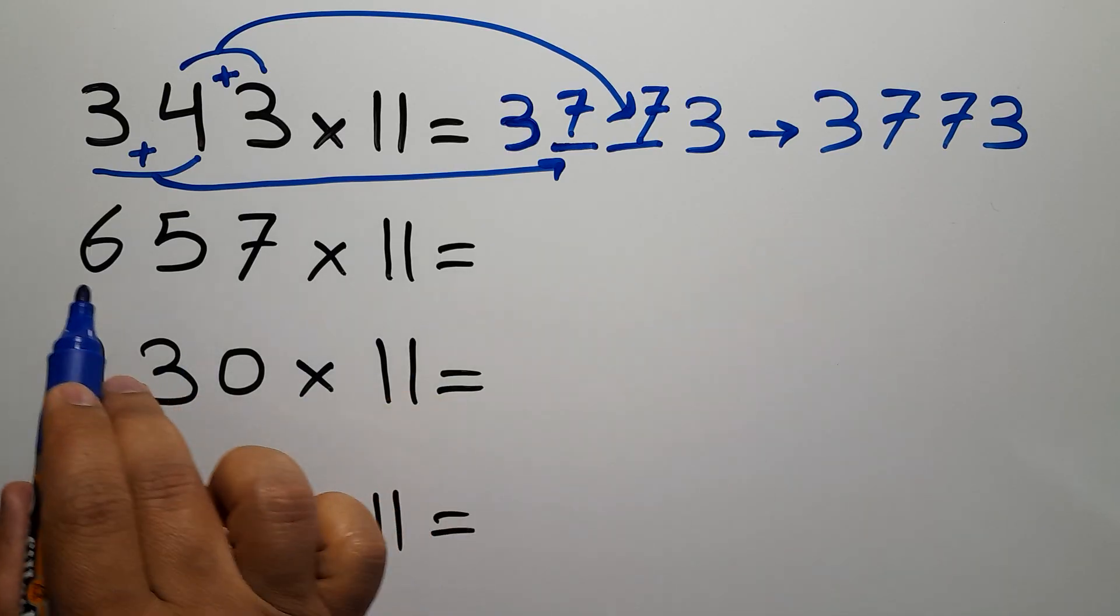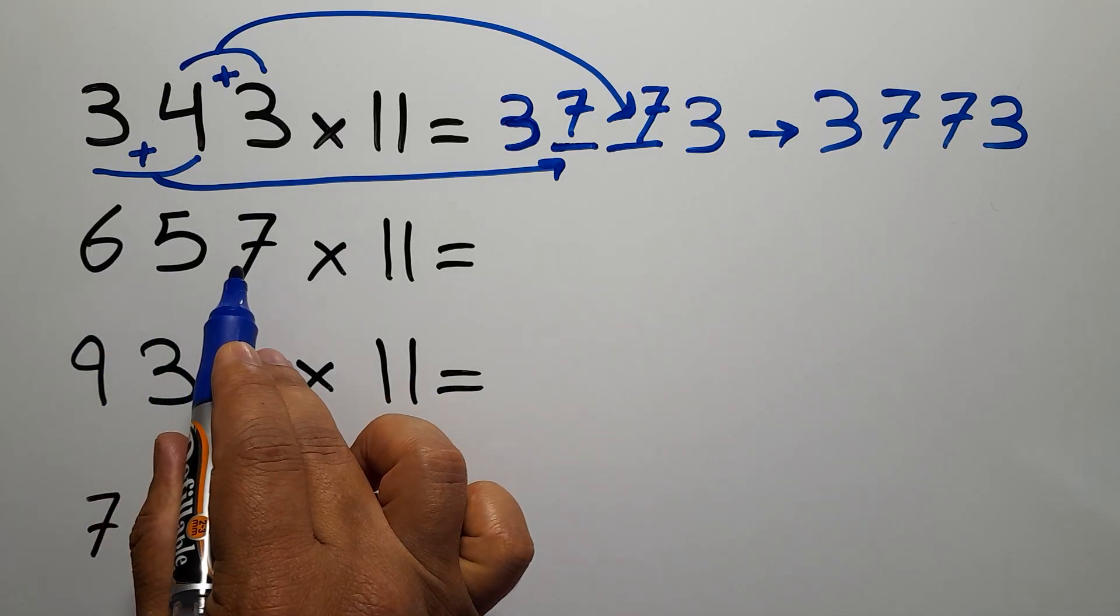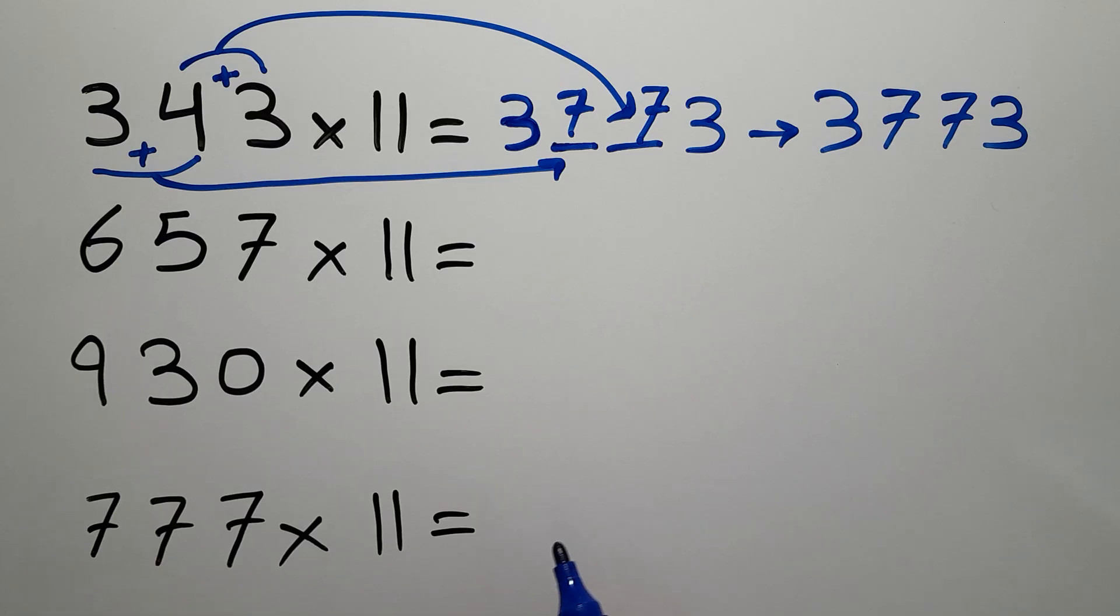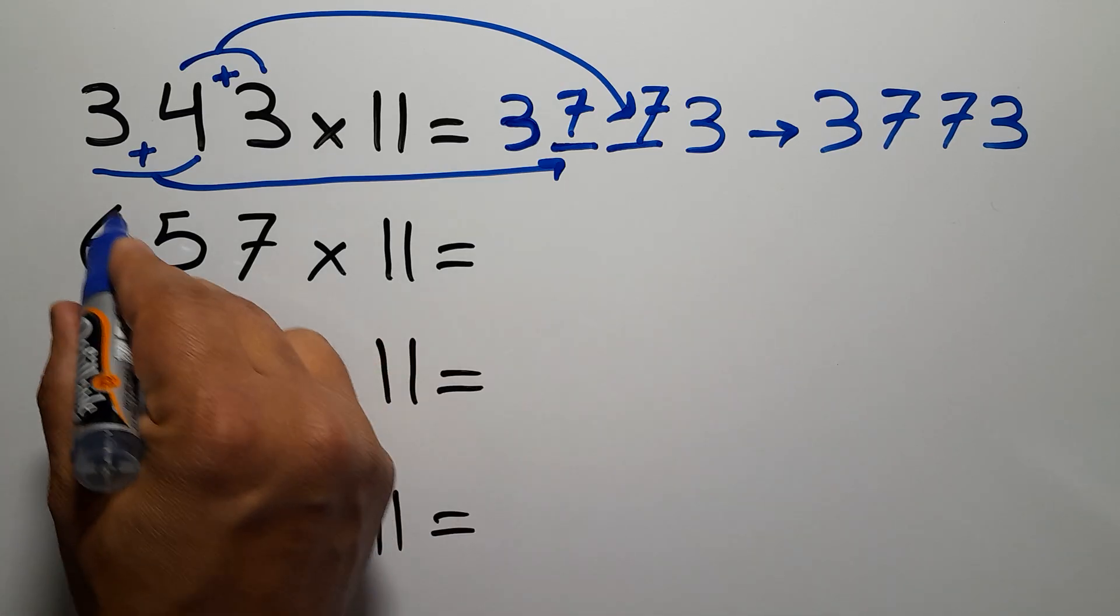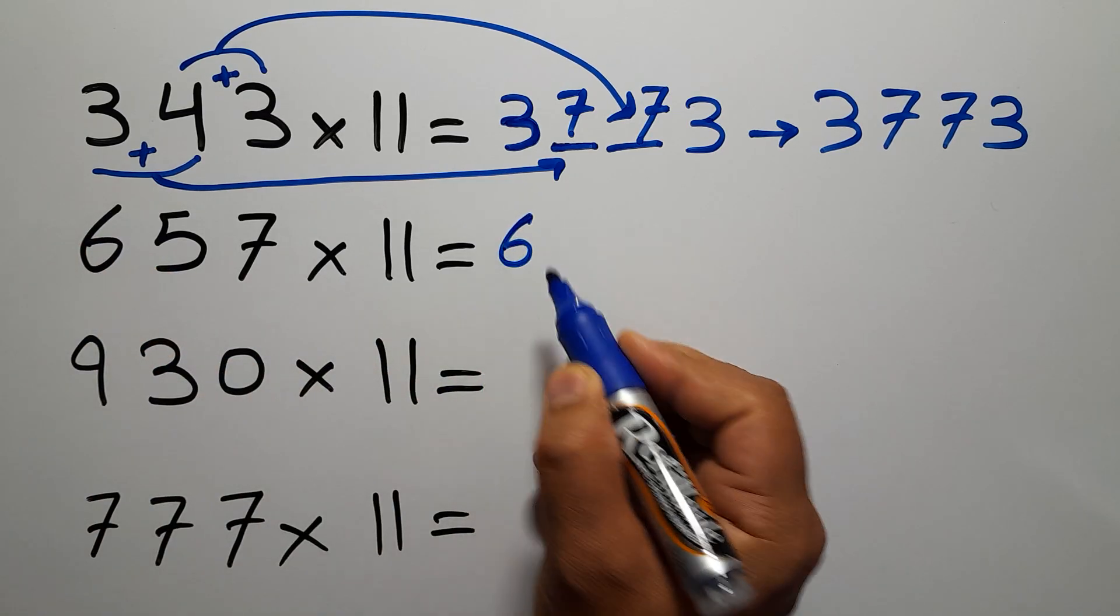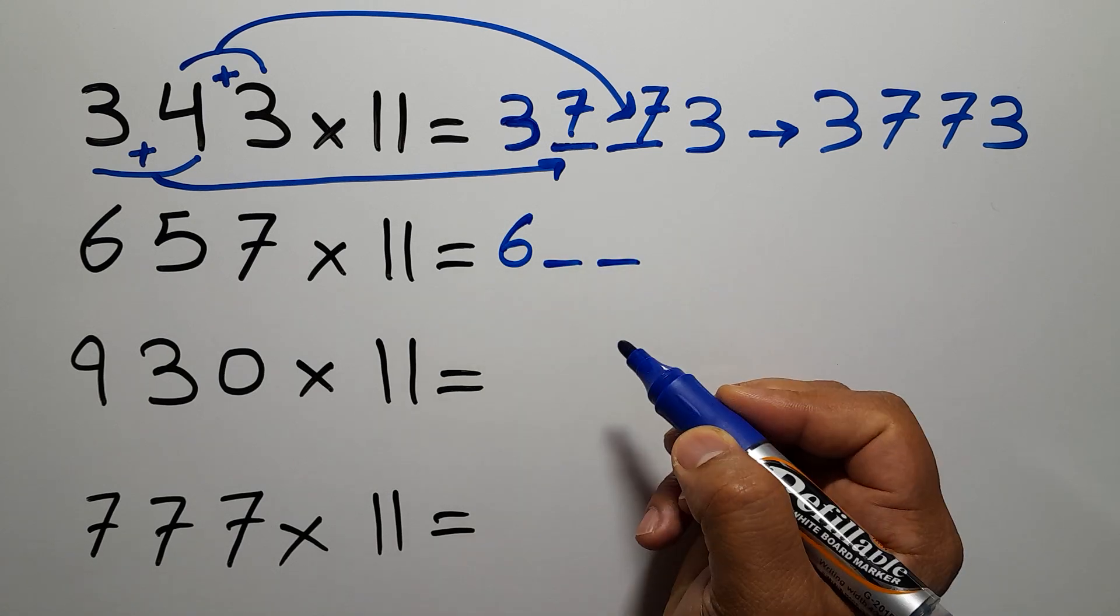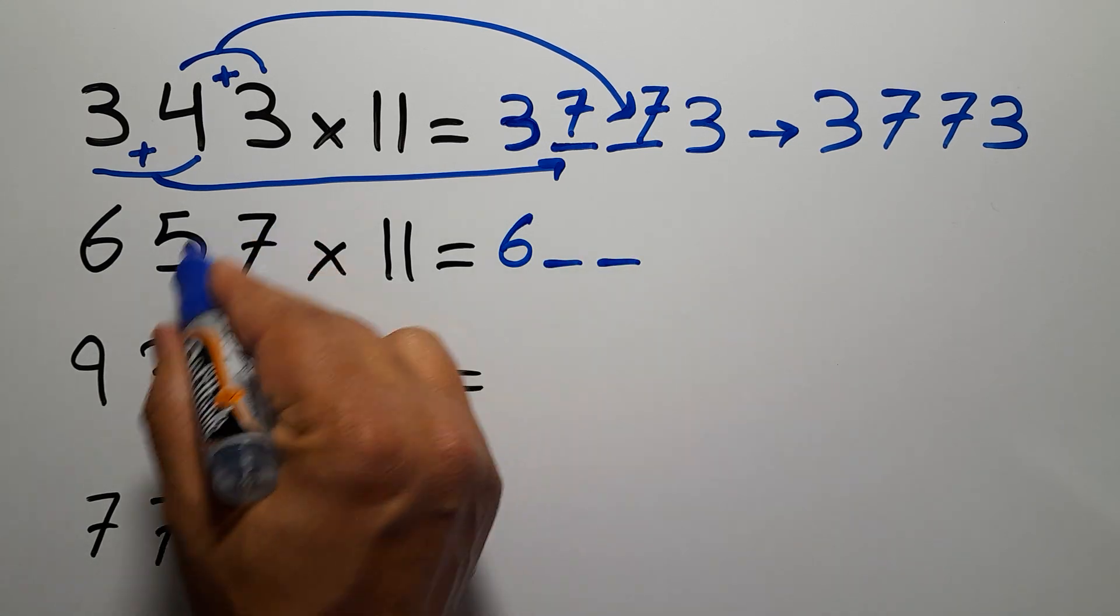657 times 11. So first we write this 6 and leave two blank spaces, then write this 7.